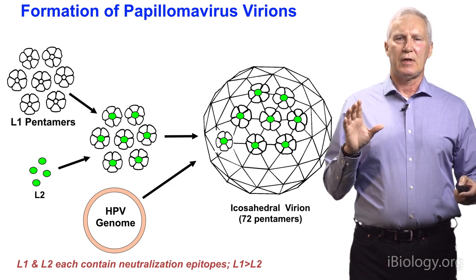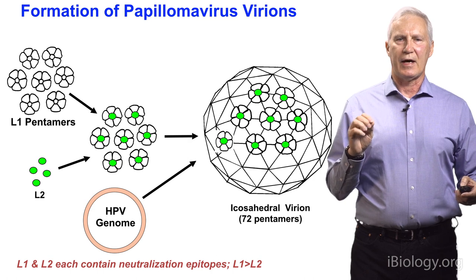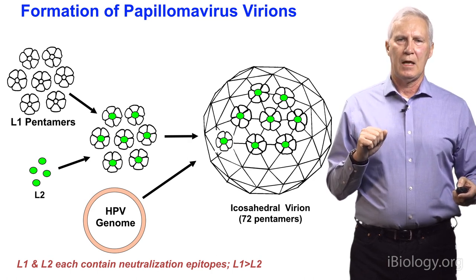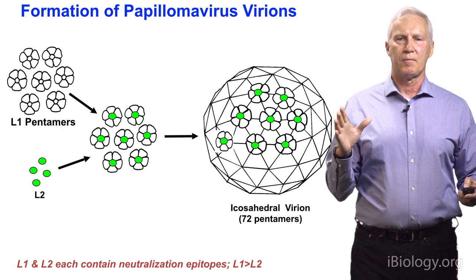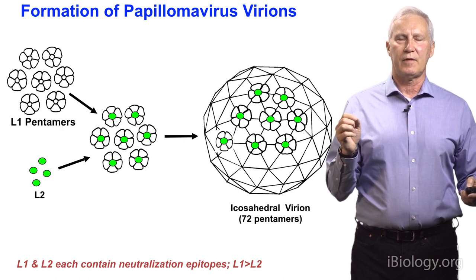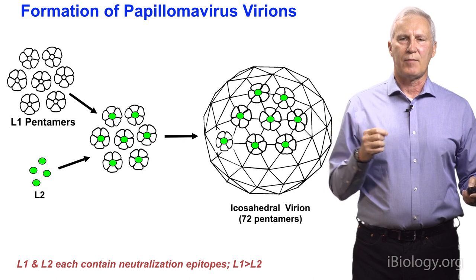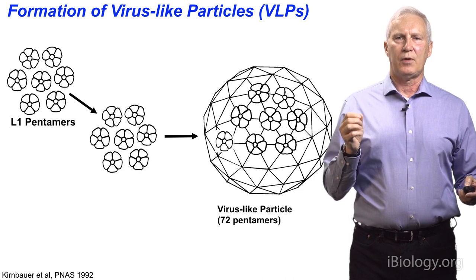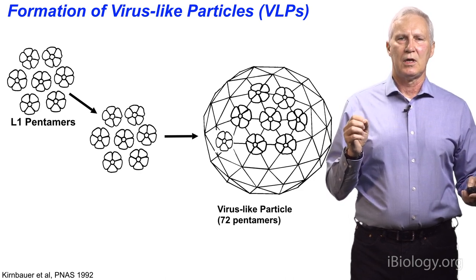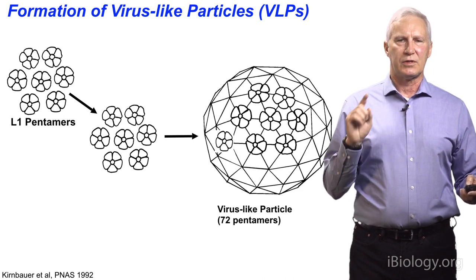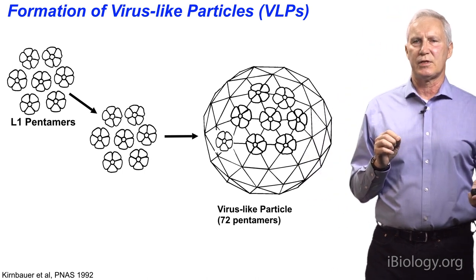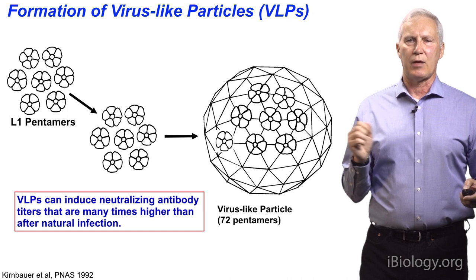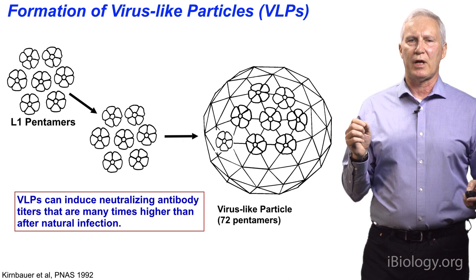The real viruses have three components: L1 pentamers, L2 monomers, and the HPV genome. But through molecular biology tricks, we can express just L1 and L2 alone and generate what are called virus-like particles. In animal models, we determined that L1 contains most of the determinants to which neutralizing antibodies can bind. So the current vaccines are made up of what we call L1-only VLPs — virus-like particles — essentially made up of 360 copies of a single protein, L1. They're considered subunit vaccines because they're non-infectious and non-oncogenic. VLPs induce extremely high titers of neutralizing antibodies at least a log higher than what is seen after natural infection.